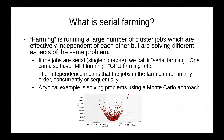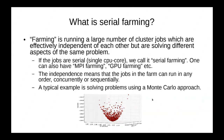There are many different situations in research when serial farming is the proper tool to use. Here's just one example: a Monte Carlo type of simulation can be used to find, for example, a global minimum in a multi-dimensional parameter space. As you can see in this plot, each red dot can correspond to a separate serial farm job which is altogether used to find a global minimum of a certain problem.